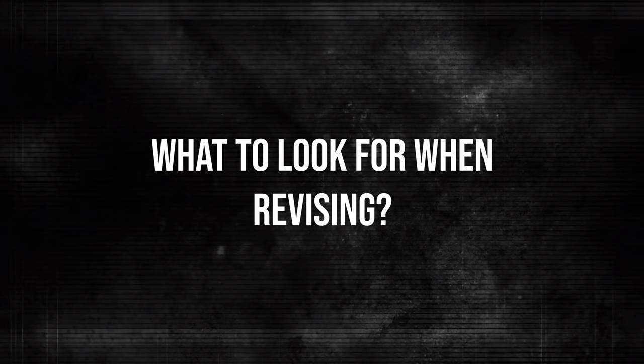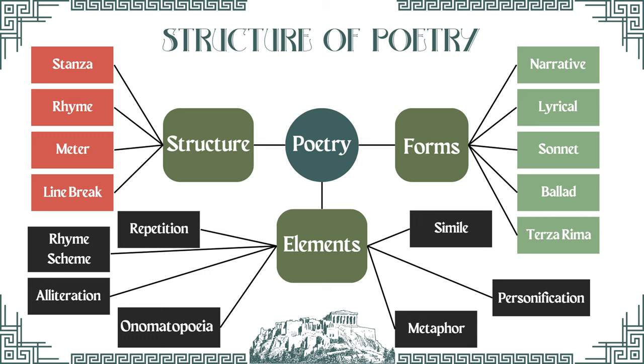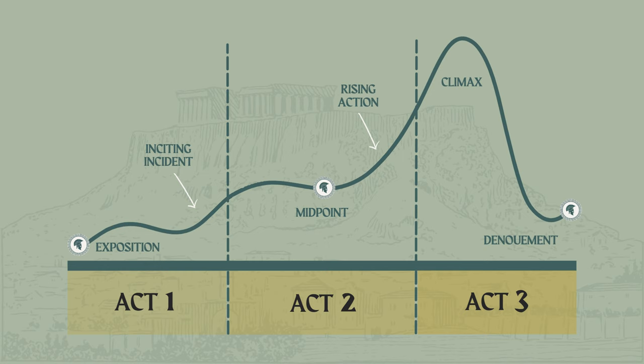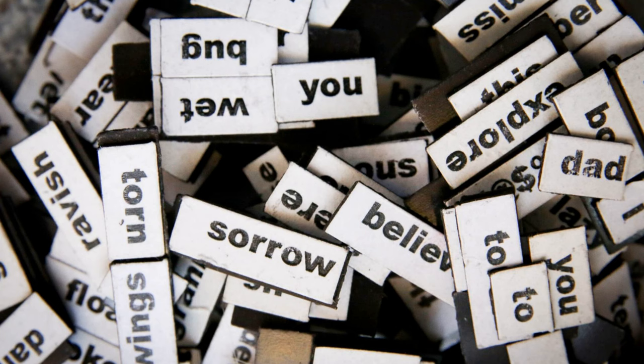Arranging your words carefully can create powerful effects that enhance the meaning of your words. When it comes time to revise your poetry, there are a few key things to look for. First, check the overall structure of your poem. Does it have a clear beginning, middle, and end? If not, consider revising the order of your lines or adding new transitions.